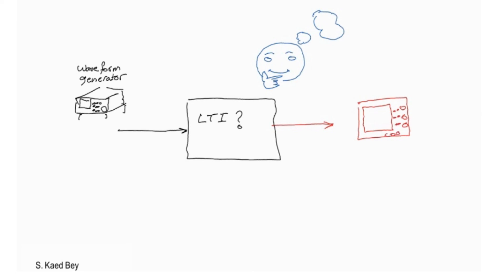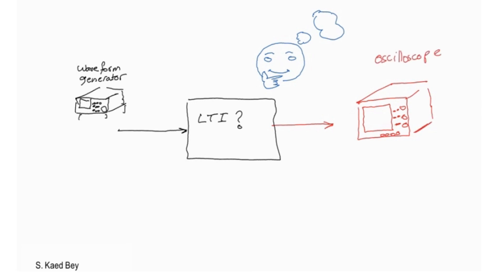So, you could first ignore the nonlinearity. If the nonlinearity is small enough, the system can be approximated as linear, and those errors associated with the assumption could be tolerated as noise or simply ignored.